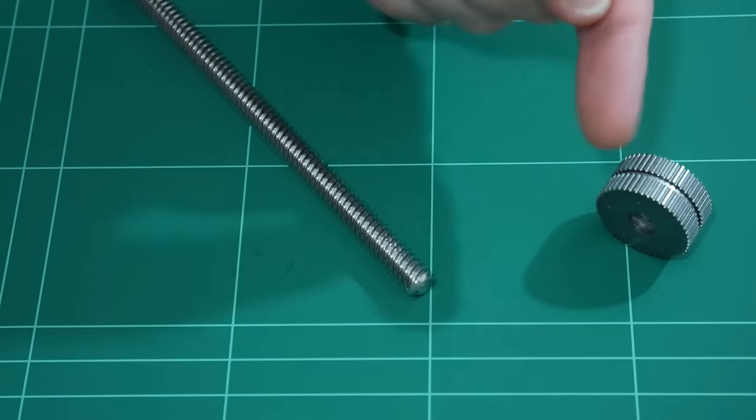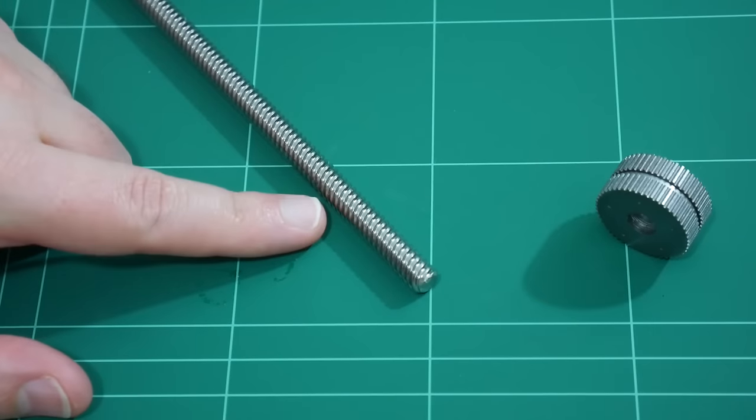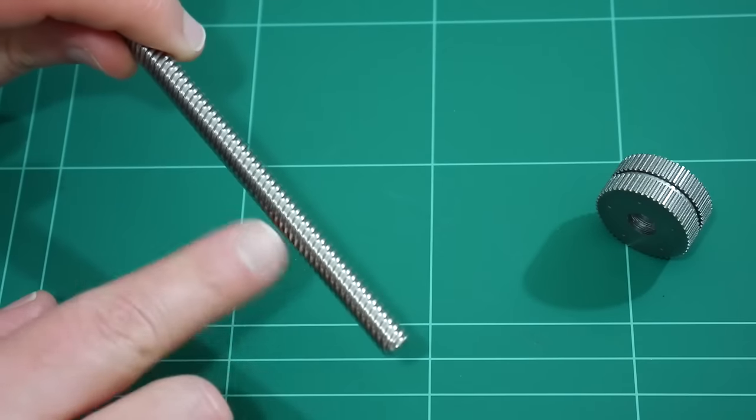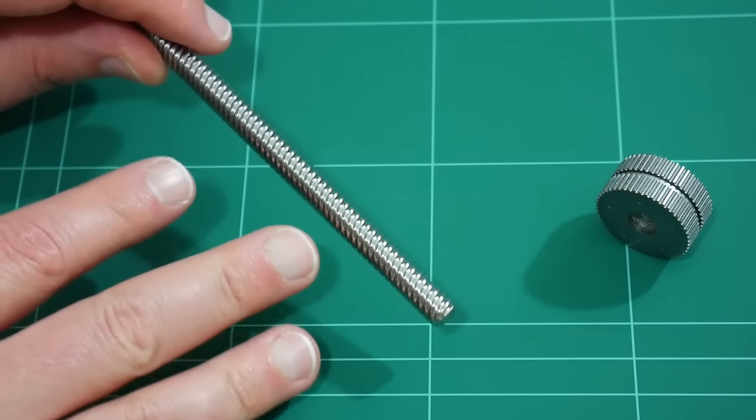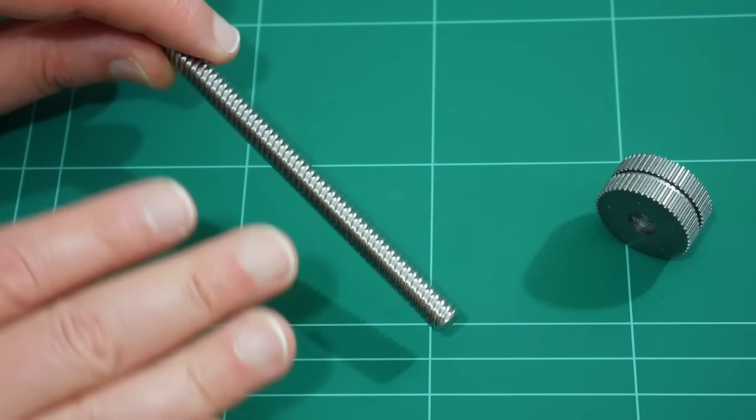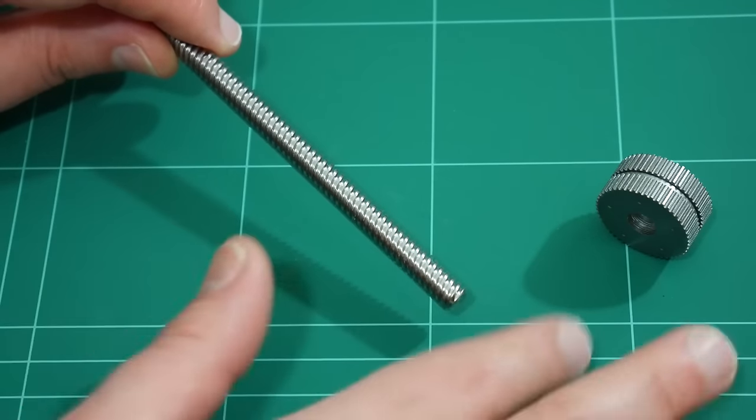Now, before we attempt to glue the rotor magnet to the new lead screw, just make sure you've cleaned the lead screw. Get rid of any grease or oil that may be on here, as we want the two-part epoxy to bond directly to the lead screw and also to the rotor.